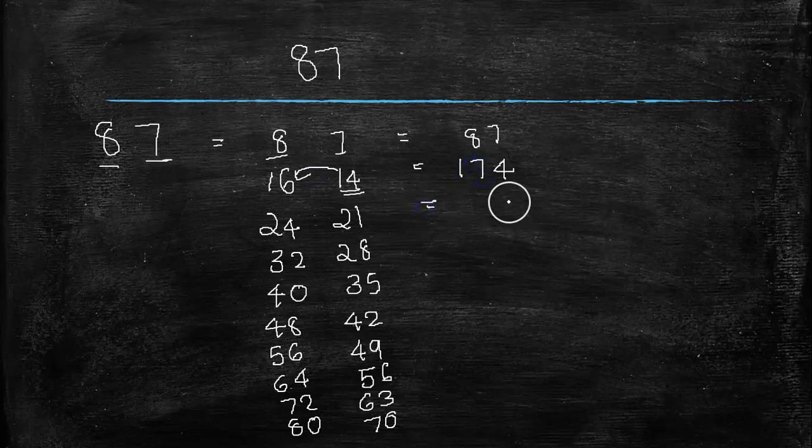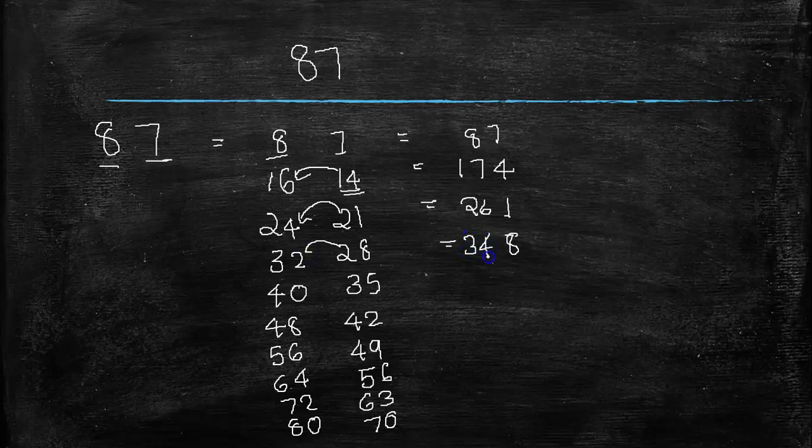Here it is 1, the digit which is left over gets added to this. That is 24 plus 2 is 26. Here it is 8, then this 2 is added to here, that is 34. Next, here units place is 5, then this 3 is added to this, that is 43.